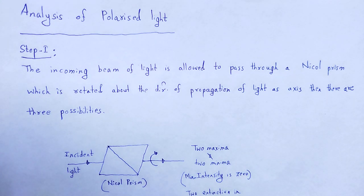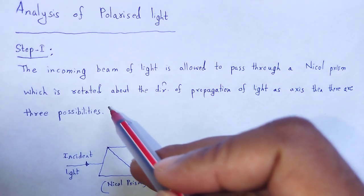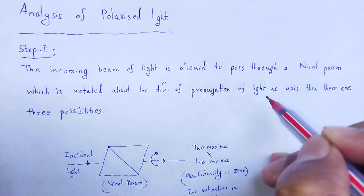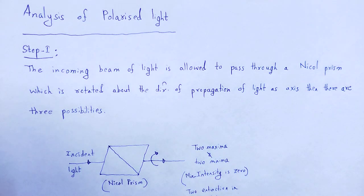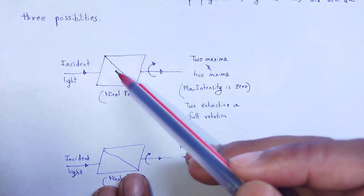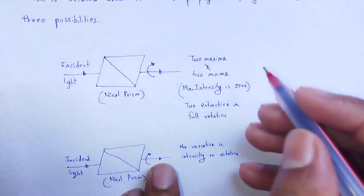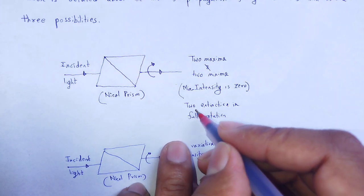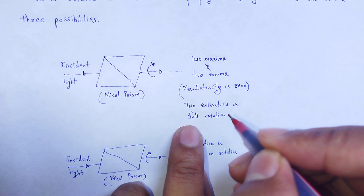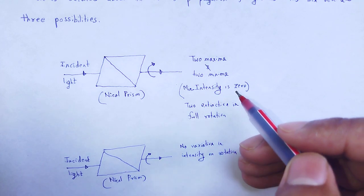Step 1. The incoming beam of light is allowed to pass through a Nicol prism, which is rotated about the direction of propagation of light — that is the axis. There are three possible scenarios. Consider a Nicol prism with light incident on it, acting as an analyzer. In that full rotation, we see two extinctions — two maxima and two minima — and that minimum intensity is totally zero.